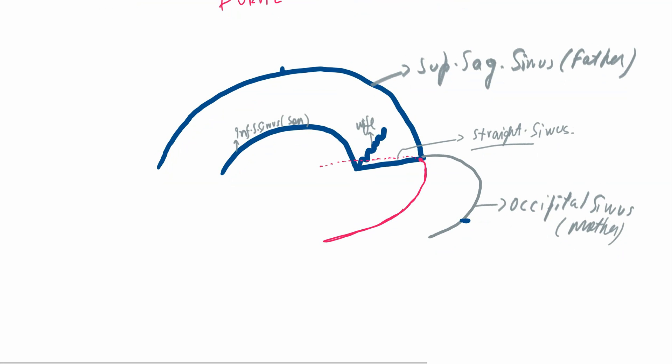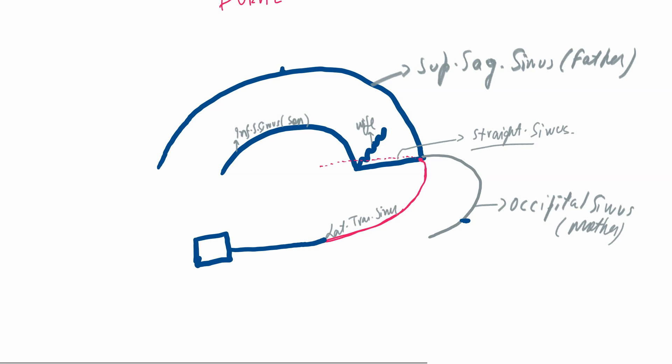Next, this lateral transverse sinus gets married to the superior petrosal sinus, which is coming from the cavernous sinus. The cavernous sinus lets their daughter, the superior petrosal sinus, marry the lateral transverse sinus.